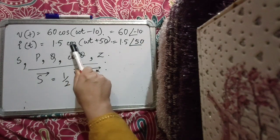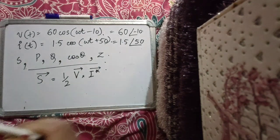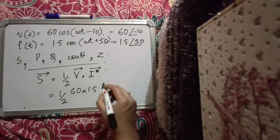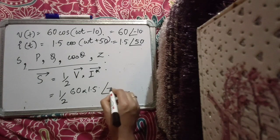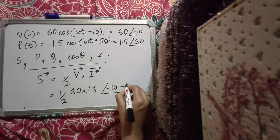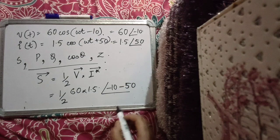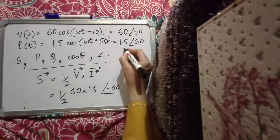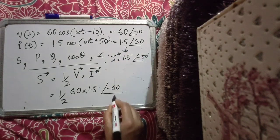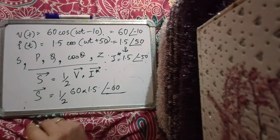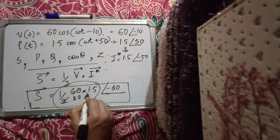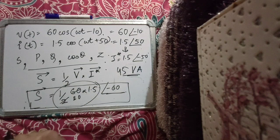The conjugate of current I* = 1.5∠−50°. So S = (1/2)·60·1.5∠(−10° − 50°) = 45∠−60°. Apparent power is the magnitude: |S| = (1/2)·60·1.5 = 45 VA. Real power P = S·cos θ = 45·cos(−60°) = 45·0.5 = 22.5 W, where θ = (−10°) − (+50°) = −60°.